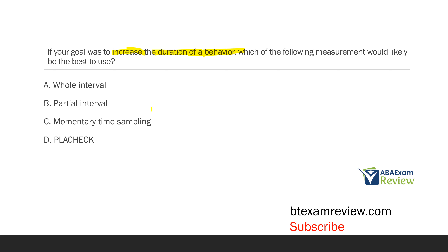Momentary time sampling — the behavior has to occur at the very end of the interval, just for a split second. And placheck is just momentary time sampling for groups. With partial interval and momentary time sampling, the only requirement for the behavior to count as a response is that it occurs for a split second. If we want to increase the duration of a behavior, that's not really going to help us, because each interval only counts as one response and the response only has to occur for a second.